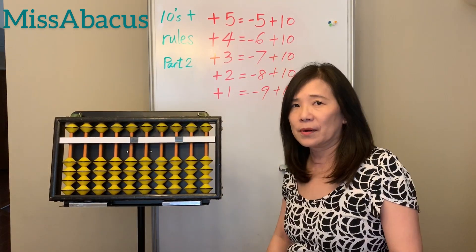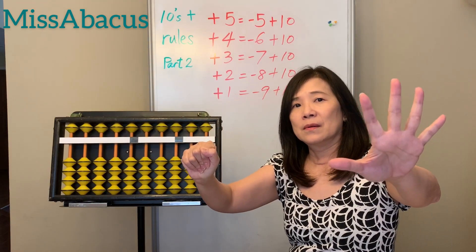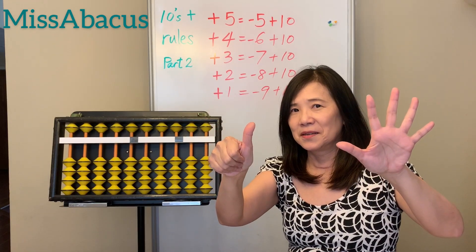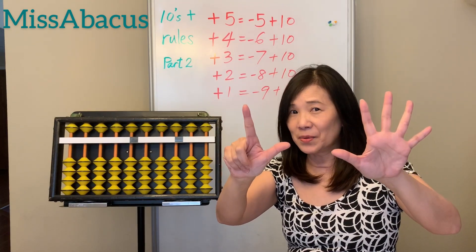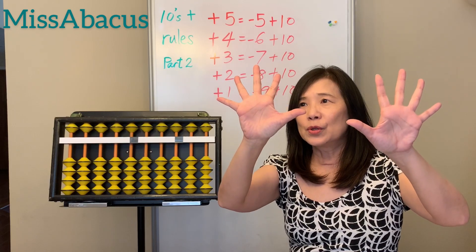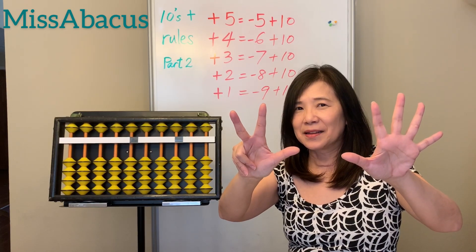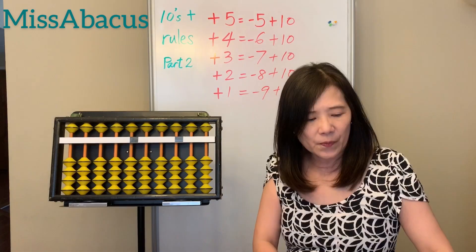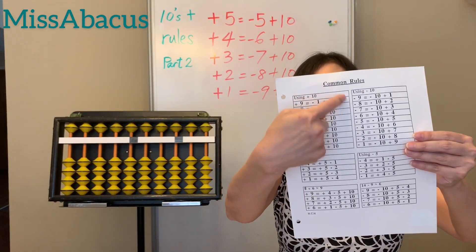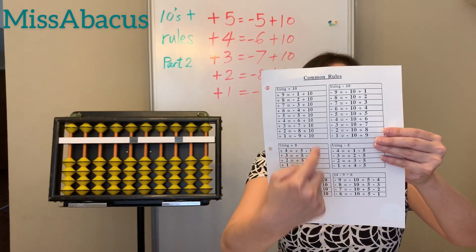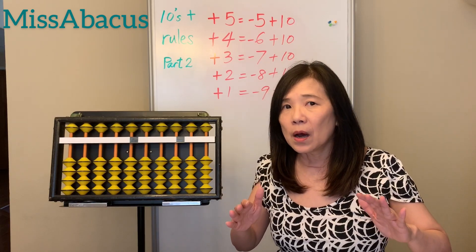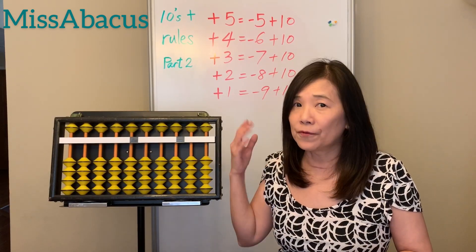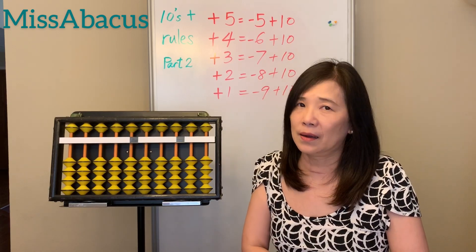Now let's start learning the new rules. For the 5 rule: minus 5 plus 10. For the 4: minus 6 plus 10. For the 3: take away 7 plus 10. For the 2: minus 8 plus 10. For the 1: minus 9 plus 10. These are all the rules for the first part — the 10th rule for the plus part. Next week we'll start the minus part. Today's homework will combine all the rules we've learned so far: 5, 4, 3, 2, 1 as well as 9, 8, 7, and 6.